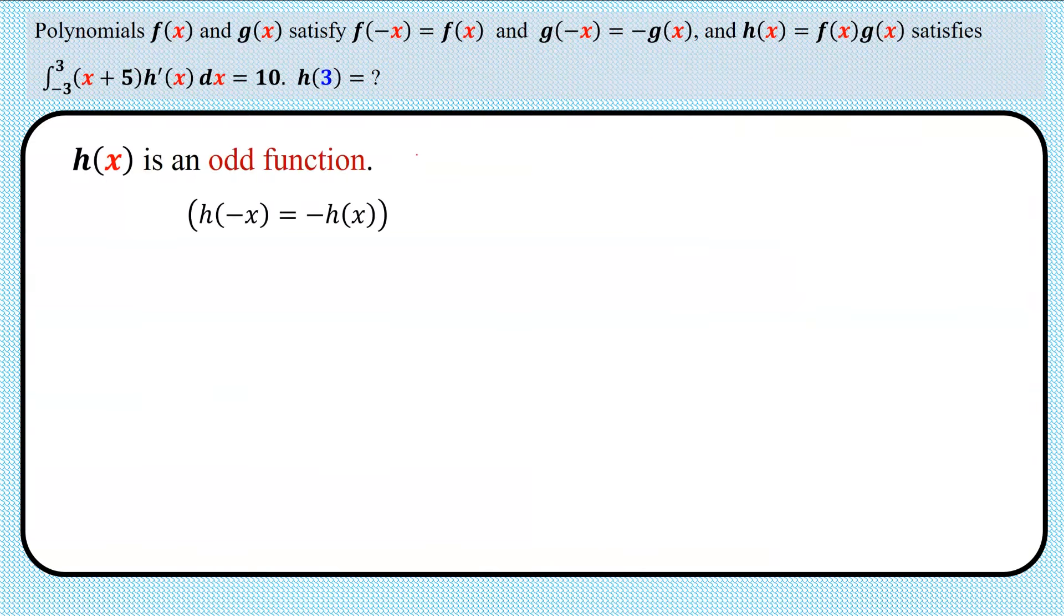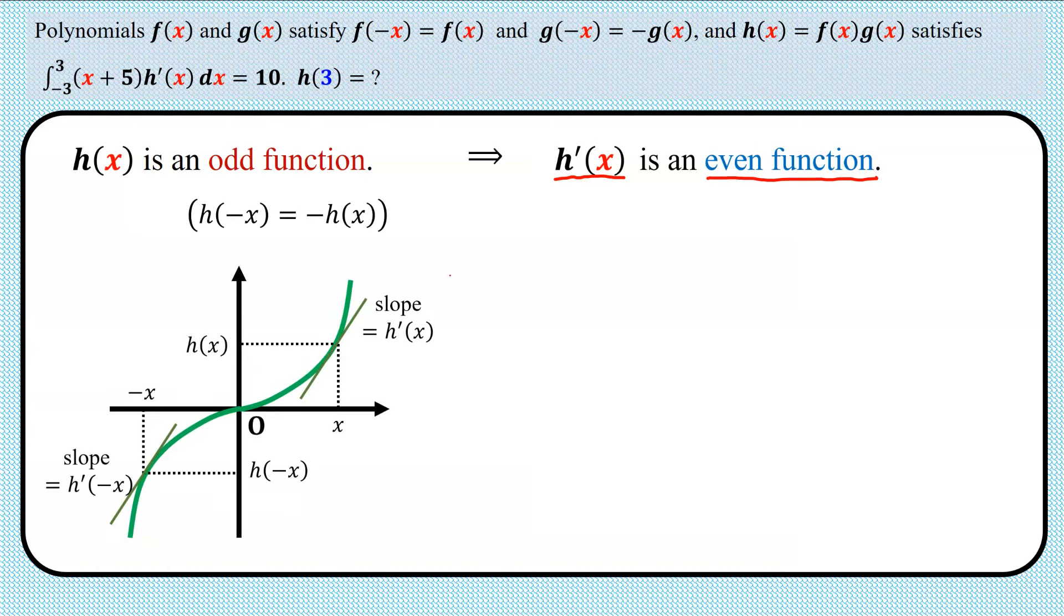The second point to notice is that because h(x) is an odd function, its derivative h'(x) is an even function. This can be intuitively understood from the fact that the graph of the odd function is symmetric with respect to the origin, and the geometric meaning of the derivative is the slope of the graph. Since f(x) and g(x) are polynomials, you can either use that.